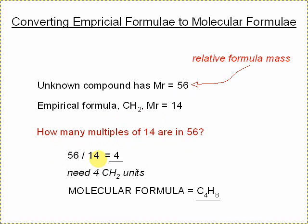And 56 divided by 14 is 4. So you would need 4 of these CH2 units to make up to the complete Mr value of 56. So we'd say the molecular formula here is C4H8, which is fine. That would be butene.